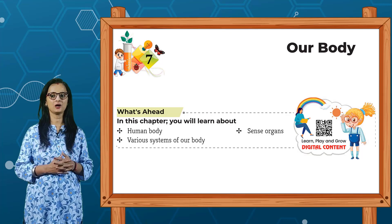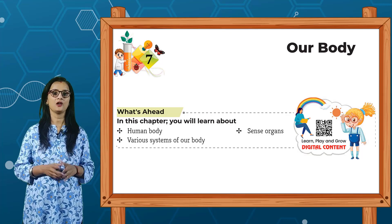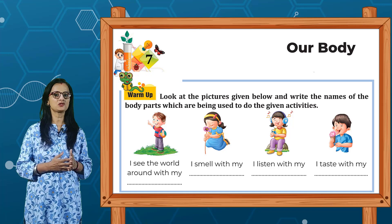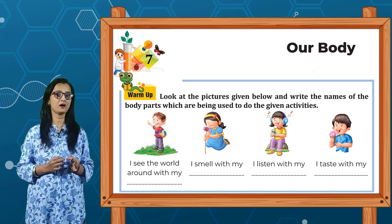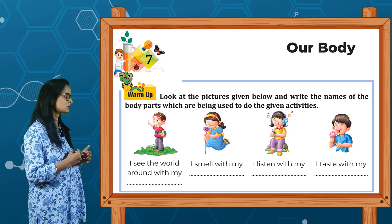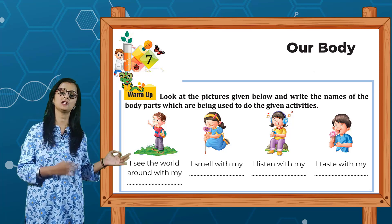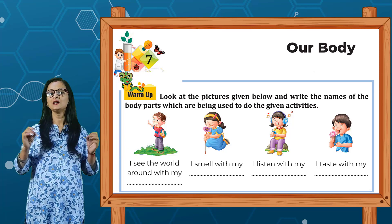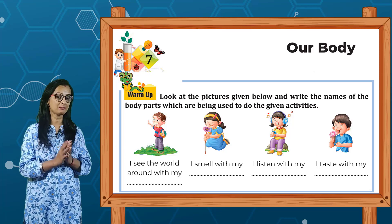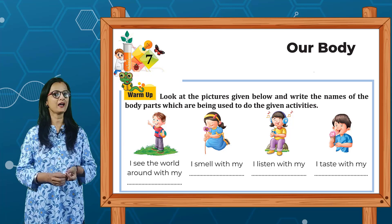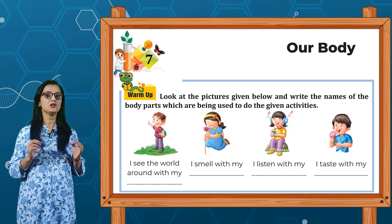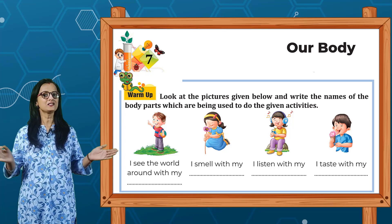In this chapter you will learn about the human body, sense organs, and various systems of our body. Let's start with a warm-up exercise. Look at the pictures given below and write the name of the body parts being used. We see the world around us with our eyes, we smell with our nose, we listen with our ears, and we taste with our tongue.